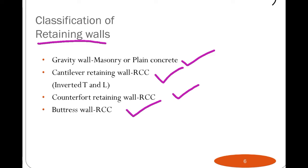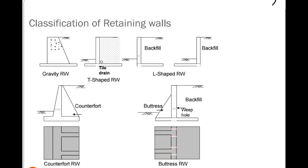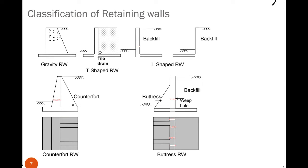In a gravity retaining wall, the earth structure is retained by gravity itself. It is constructed using plain concrete or masonry wall. For cantilever retaining walls and counterfort retaining walls, we use reinforced cement concrete reinforced with steel. These retaining walls are very important and are commonly used in hilly regions.